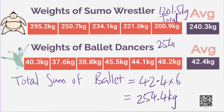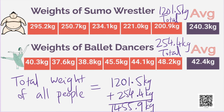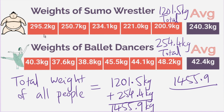So, the total weight of all ballet dancers is 254.4 kg. Now that we have the total weight of sumo wrestlers and also the total weight of ballet dancers, we can add these two to get the total weight of all these people. The total weight of both combined is 1455.9 kg. Now, if we want to find the average weight, we just divide this by the total number of people. We have 5 sumo wrestlers and 6 ballet dancers, so the total is 11 people. The average will be 1455.9 divided by 11, which gives an average weight of 132.35 kg.